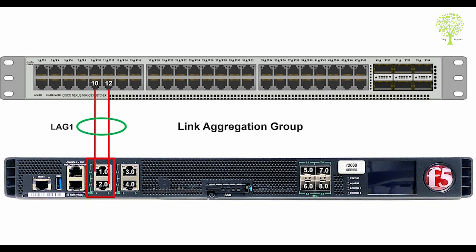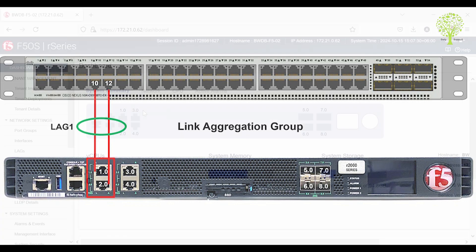When LACP is enabled on a LAG, the port is automatically configured into groups without manual configuration. The LACP protocol detects error conditions on member links and redistributes traffic to other member links, thus preventing any loss of traffic due to a failed link.